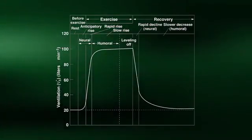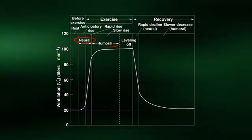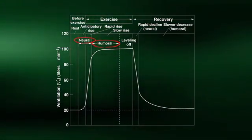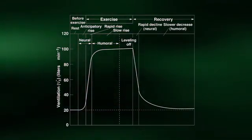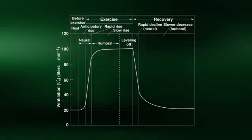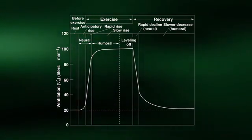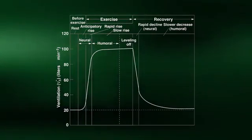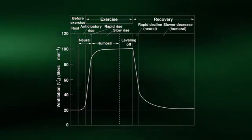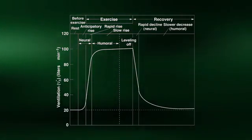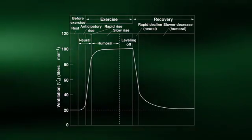The increase in ventilation during exercise is controlled by both neural and humoral, or chemical, mechanisms. At the onset of exercise, the large and rapid increase in ventilation is primarily controlled by neural pathways in the brain, stimulating muscles involved in breathing. During submaximal steady-state exercise, the fine-tuning of ventilation is accomplished by blood-borne substances such as carbon dioxide, oxygen, and pH levels.